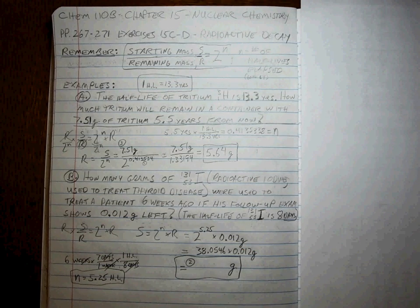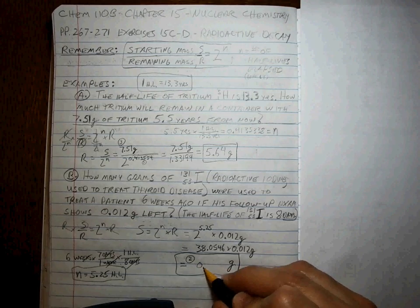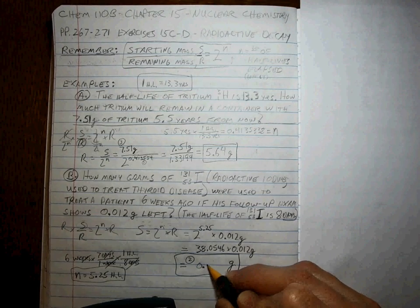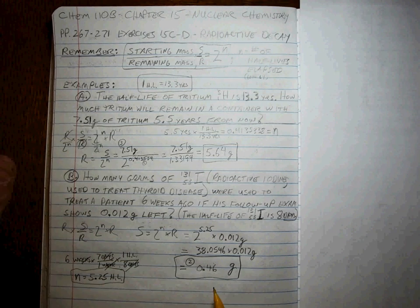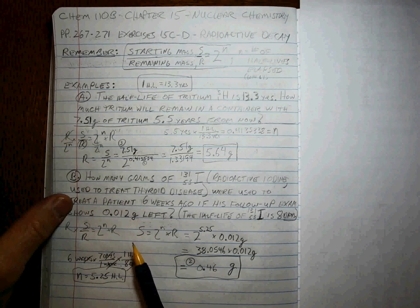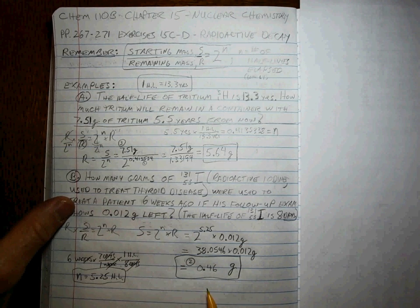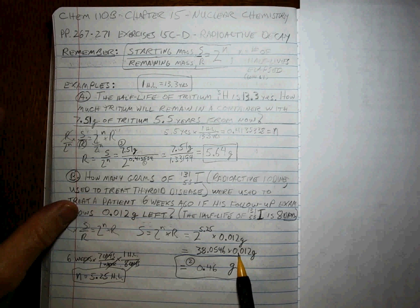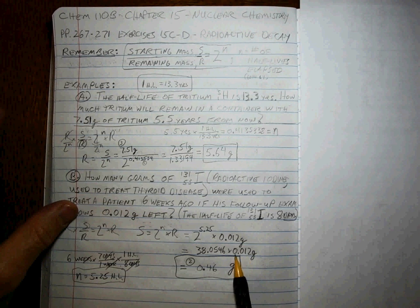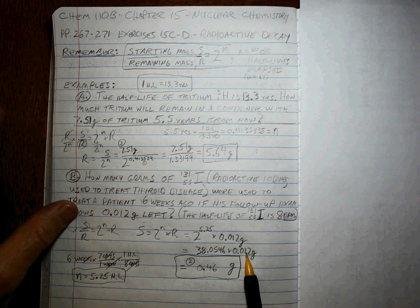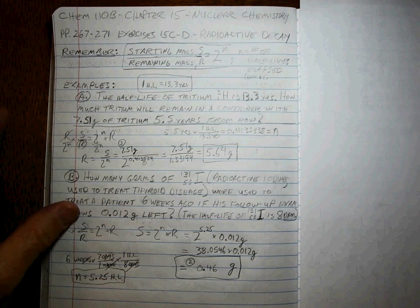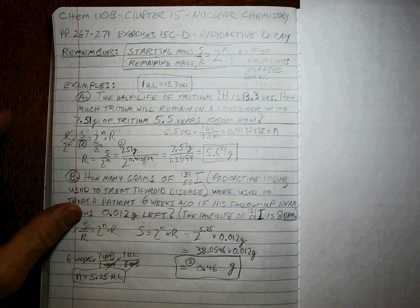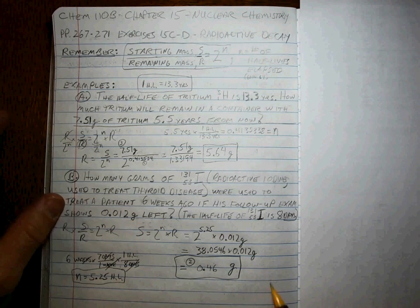I'm getting 0.46 grams. So about a half a gram was placed in this person's body. And after six weeks, we have less than, right around a hundredth, a hundredth of a gram left. Does the answer make sense?